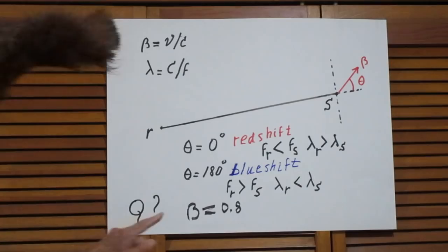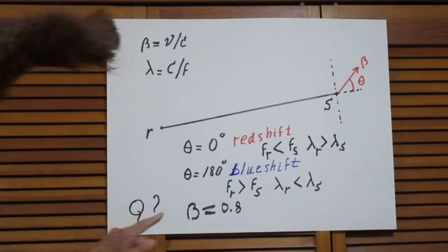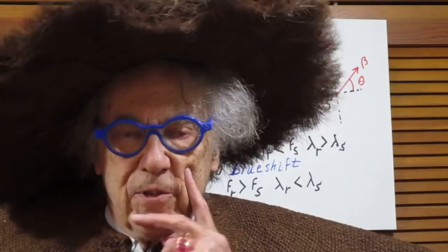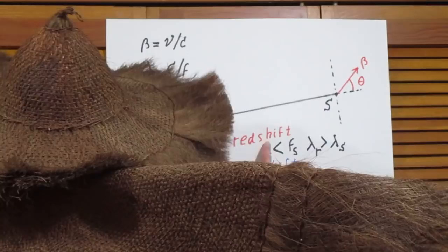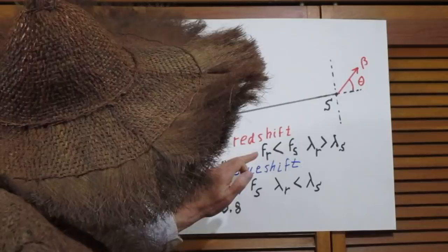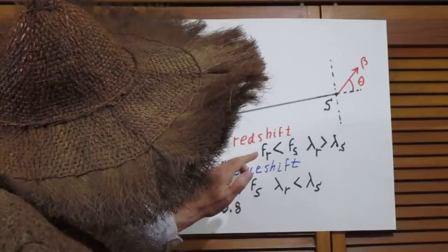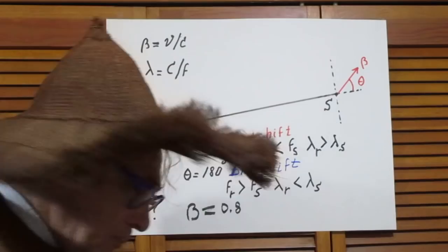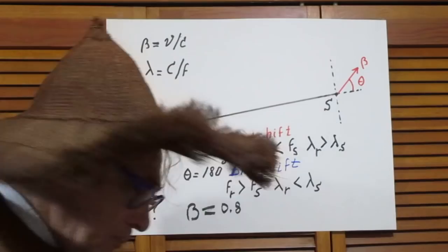Now let us assume that beta is 0.8, so the source moves with a speed of 80% of the speed of light. You should now be able to calculate the ratio of the frequency received over the frequency of the source, F_R over F_S. Knowing beta is 0.8, you should be able to calculate how much larger or smaller the received frequency is. That would be a good exercise for you.